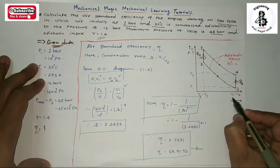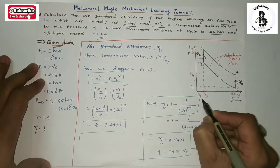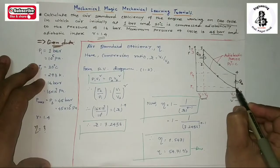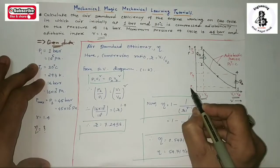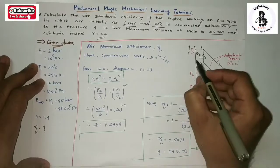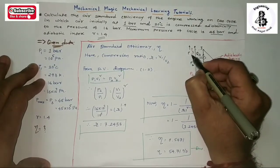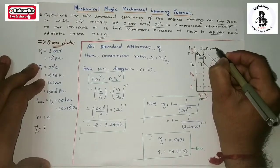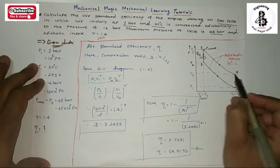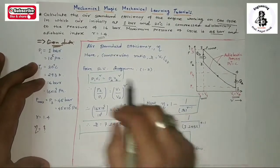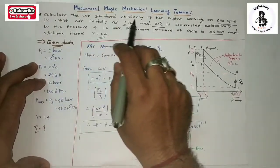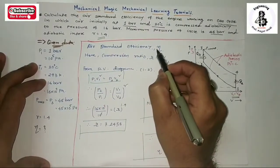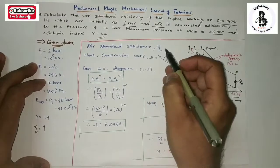From the constant volume process diagram: V1 = V4 and V2 = V3. The state points on the diagram are P1, P2, P3 (which is Pmax = 45 bar), and P4. The air standard efficiency of the engine working on the Otto cycle is what we need to calculate.